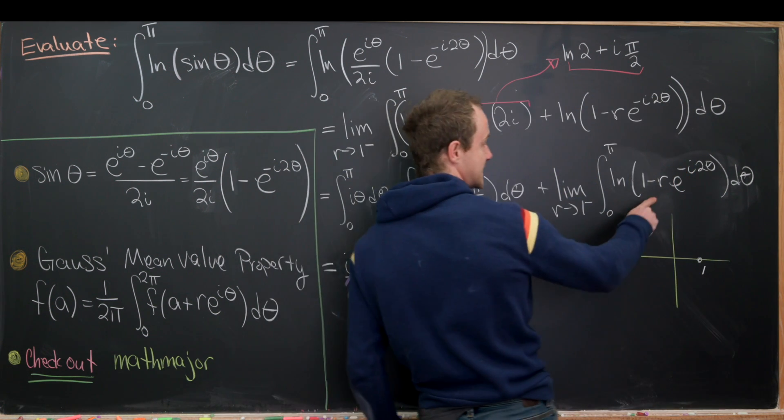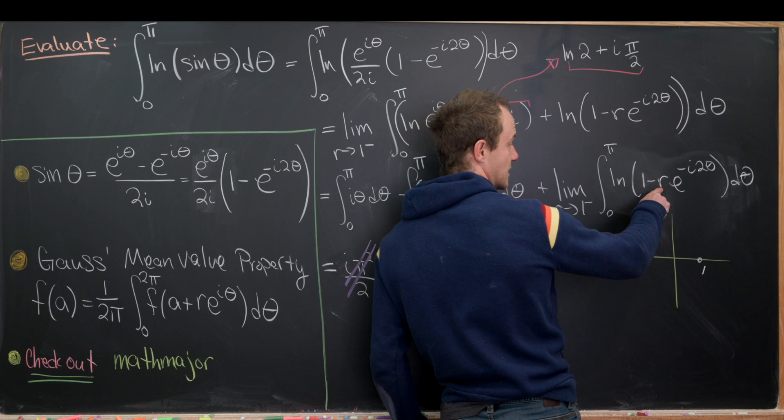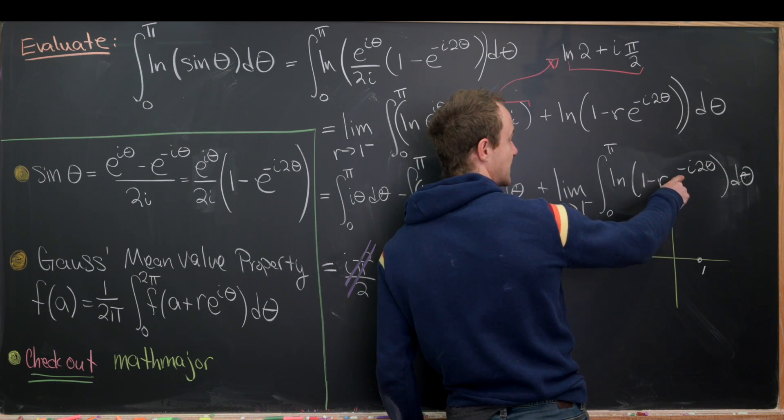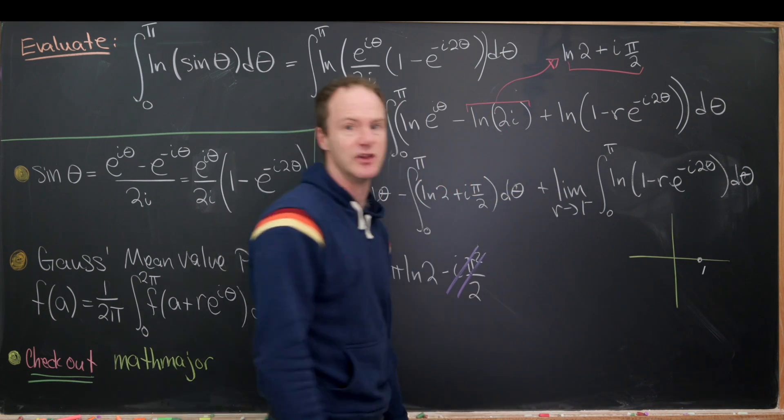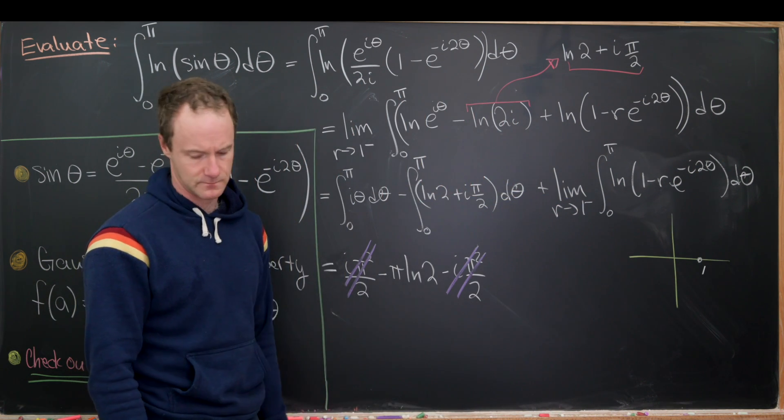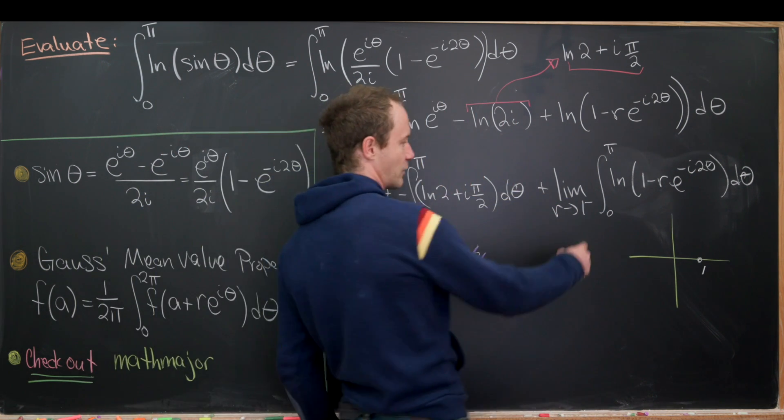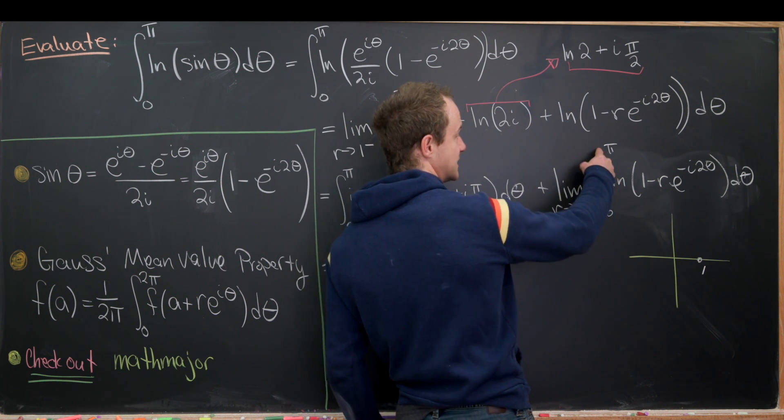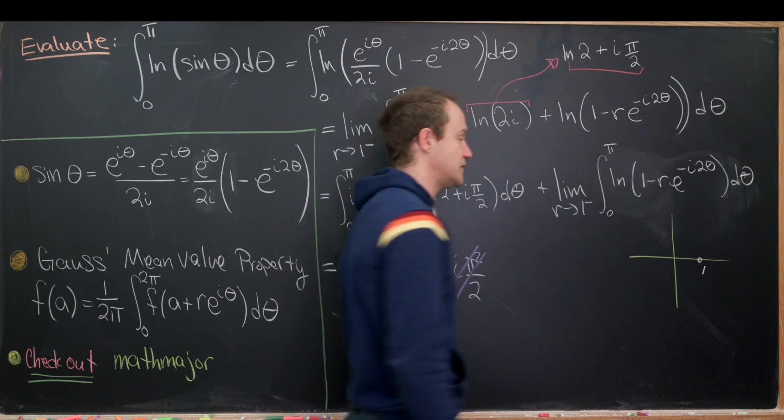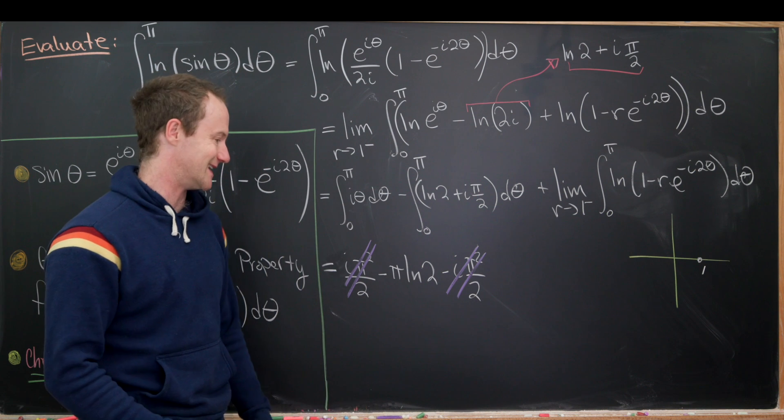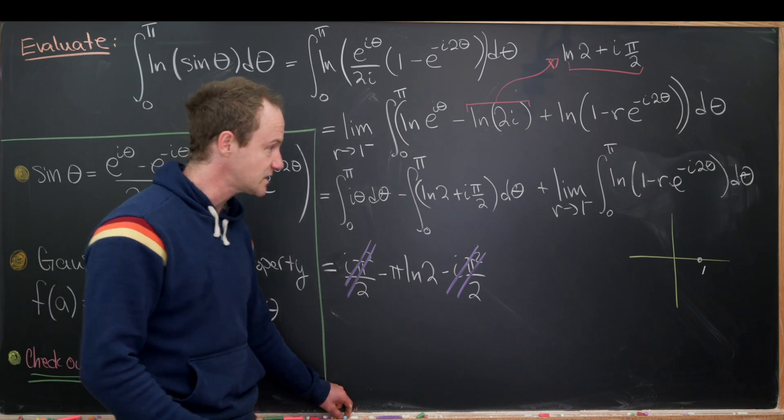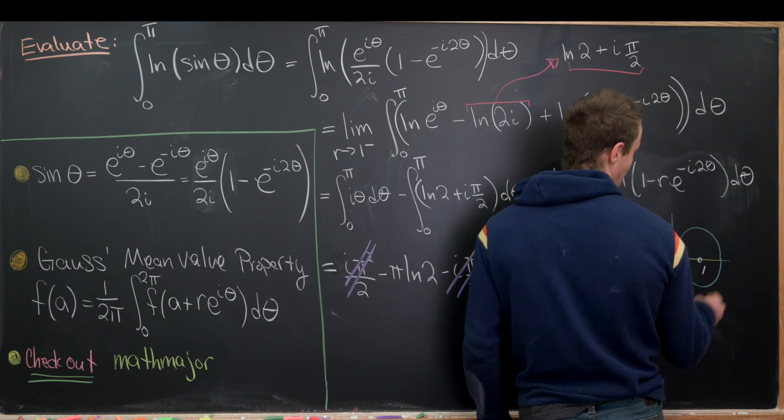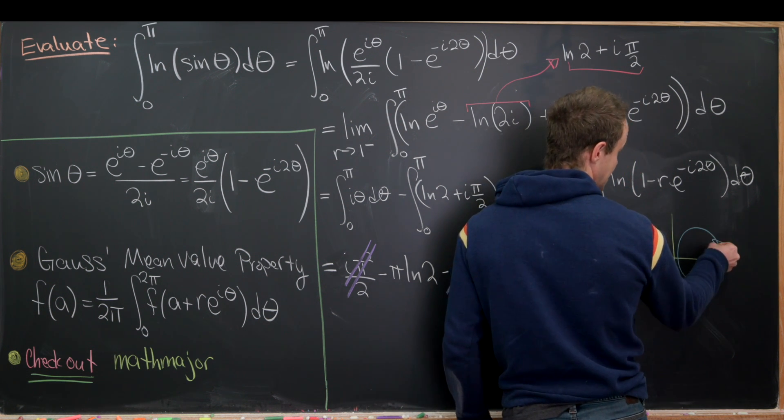And then notice that since we have r here, that's like the radius of our circle. And then we're parametrizing a circle with e to the minus i 2 theta. And you might say, well... And you might be a bit worried that we're only parametrizing half of a circle because we have got 0 to pi. But since we've got 2 theta here, we're really parametrizing an entire circle.